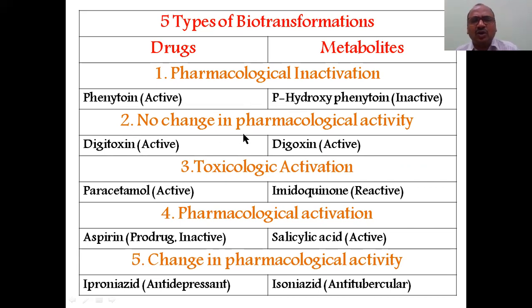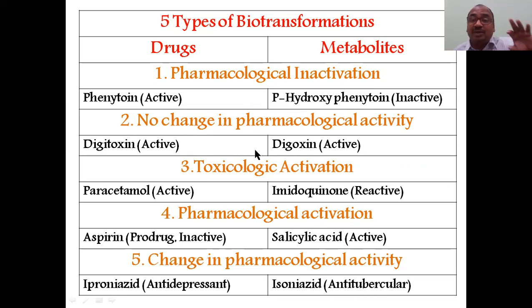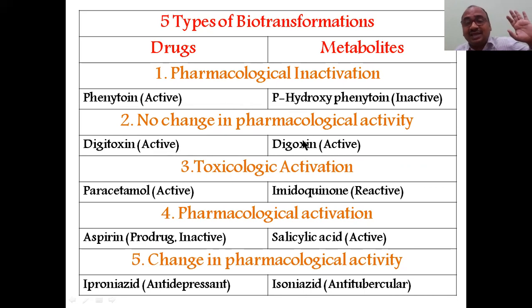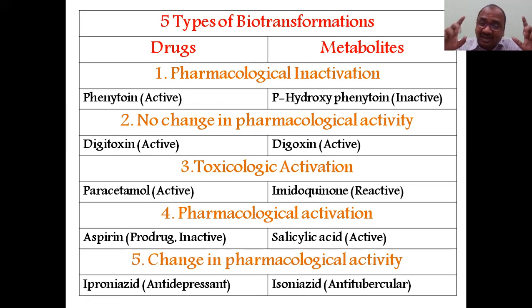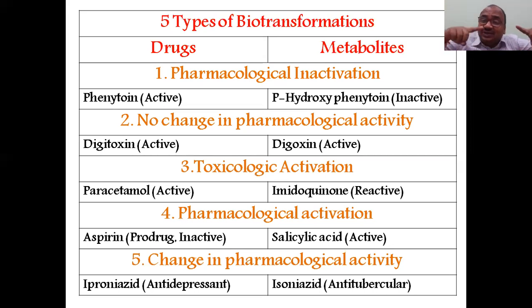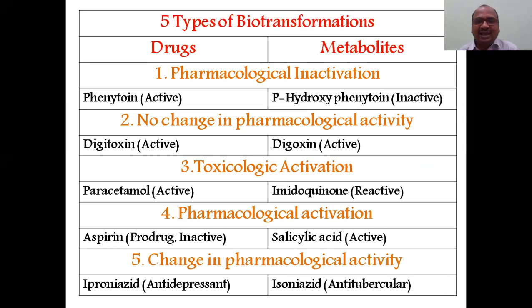The second type is no change in pharmacological activity — the drug molecule changes from one form to another, but pharmacological activity remains the same. Here, the active drug digitoxin is converted into digoxin, which is also active. Even though transformation occurs, it remains active — whereas in the first case, the active drug becomes inactive.